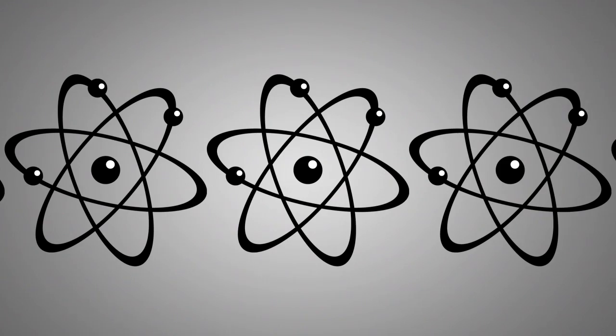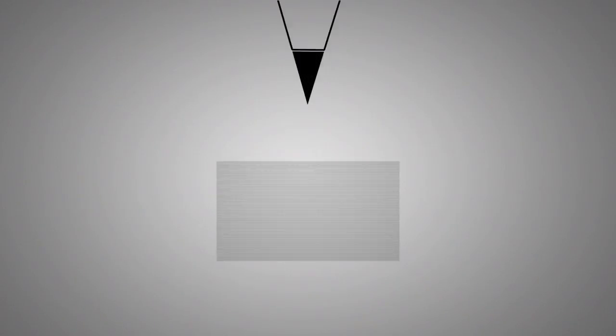Graphene is the thinnest known material, only one atom thick. It would take three million sheets of it to equal the width of a pencil tip.